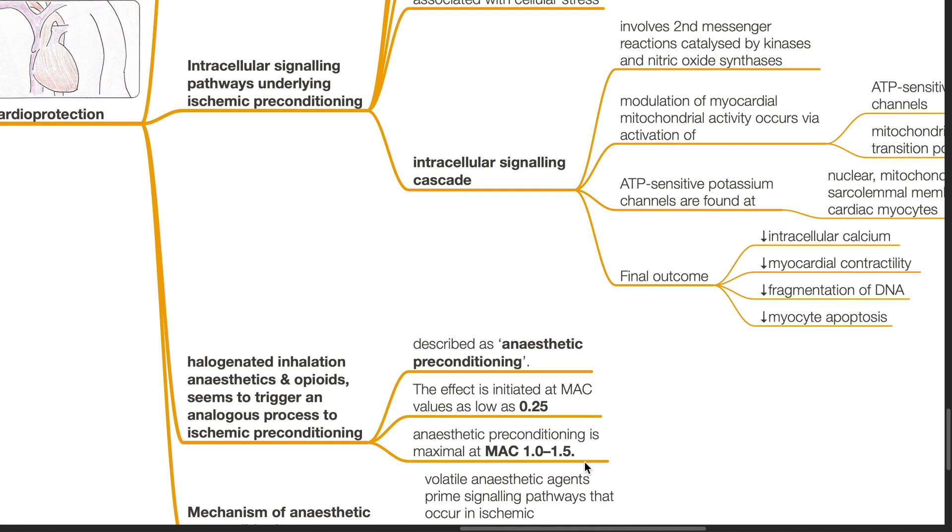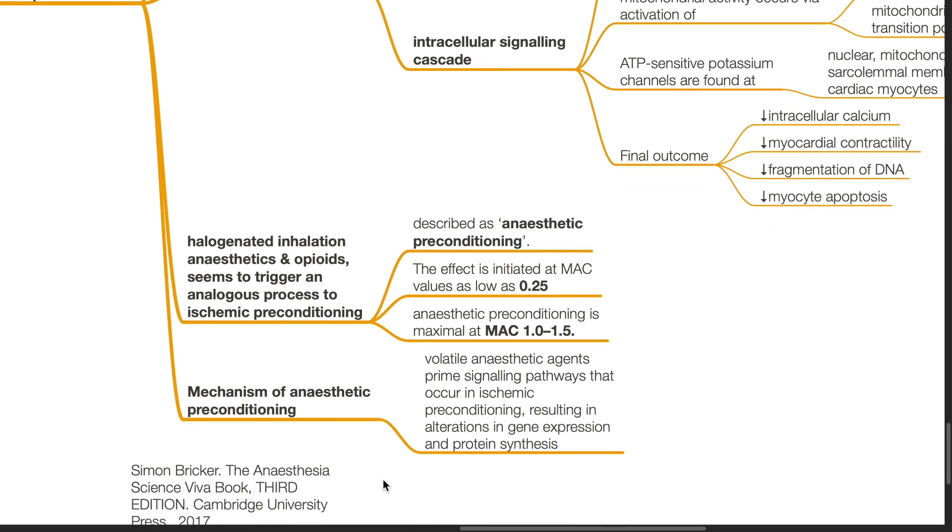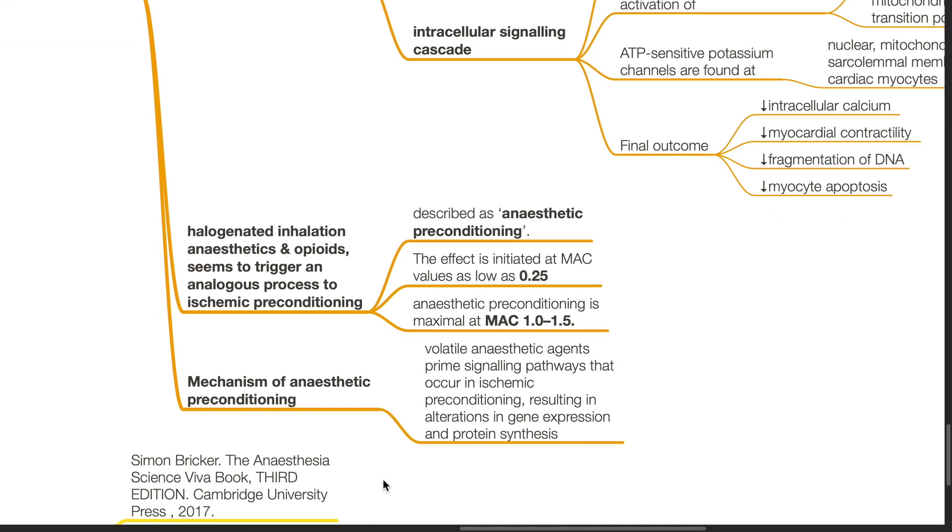Halogenated inhalational anesthetics and opioids seem to trigger an analogous process to ischemic preconditioning described as anesthetic preconditioning. The effect is initiated at MAC values as low as 0.25. Anesthetic preconditioning is maximal at MAC 1.0 to 1.5. The mechanism of anesthetic preconditioning: volatile anesthetic agents prime signaling pathways that occur in ischemic preconditioning resulting in alterations in gene expression and protein synthesis.